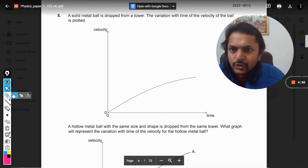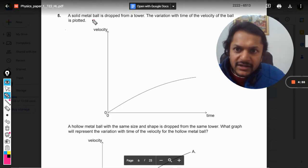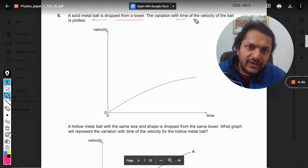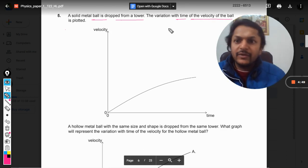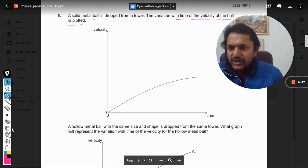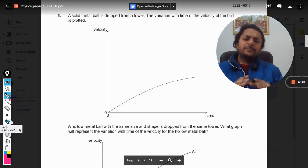Okay dear students, let us start doing this question. A solid metal ball is dropped from a tower. The variation with time of the velocity of the ball is plotted.